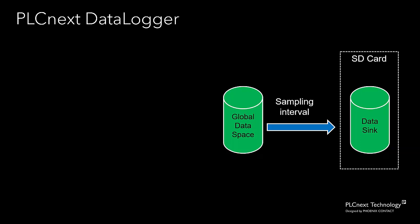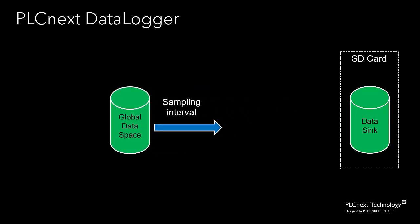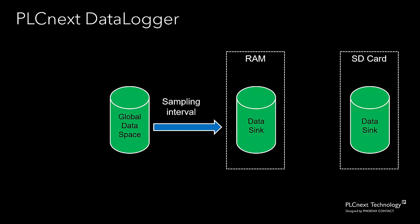So to avoid that problem, we put an intermediate data sync between the global data space and the SD card. This is an in-memory data sync that's effectively a copy of the data sync that's on the SD card. Then at a lower frequency, we can transfer data from the in-memory data sync to the data sync on the SD card. The period that we do this is called the write interval.